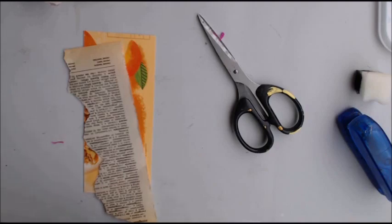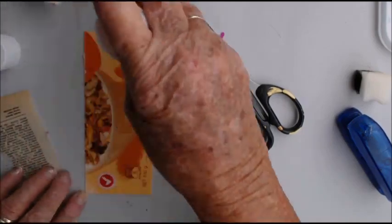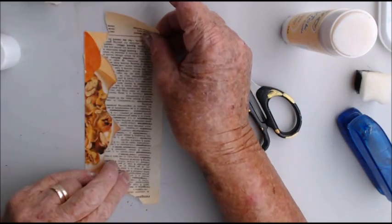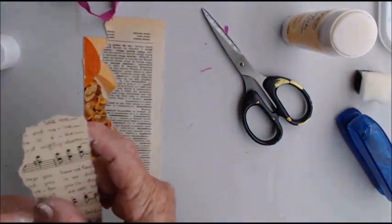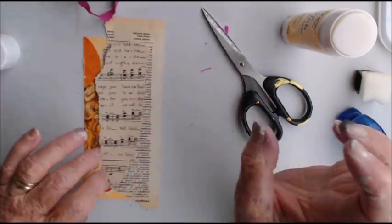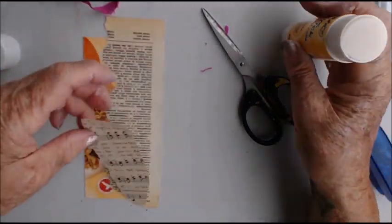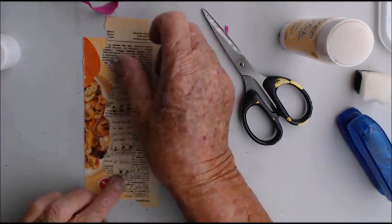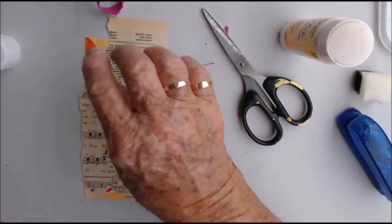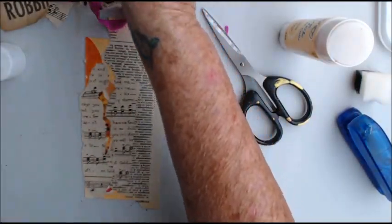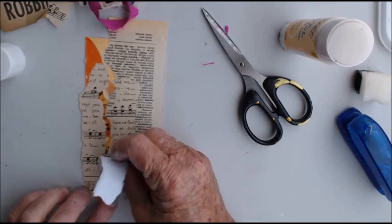Alright, put some glue down. Just start adding bits of lots of paper. Let's just take that a bit down a bit further, just add that on like that. A little bit of color.